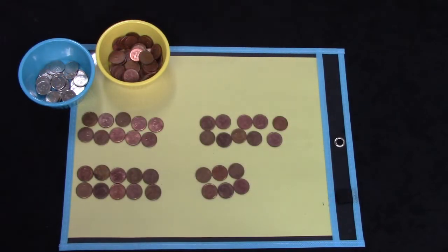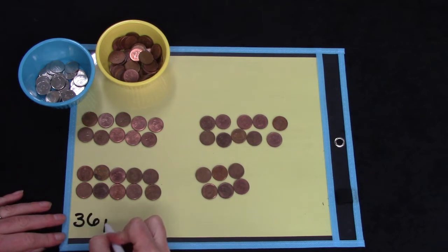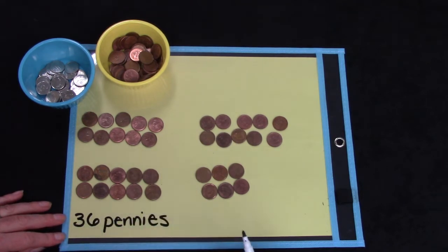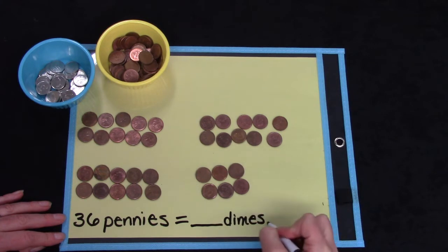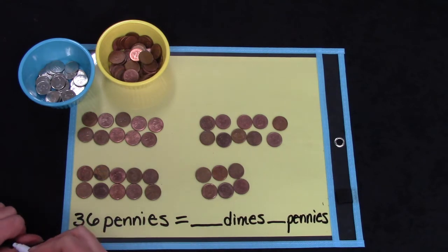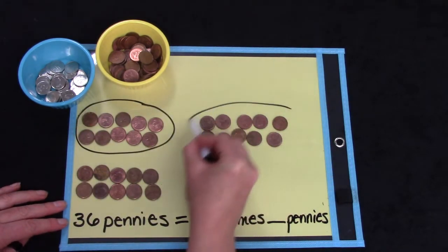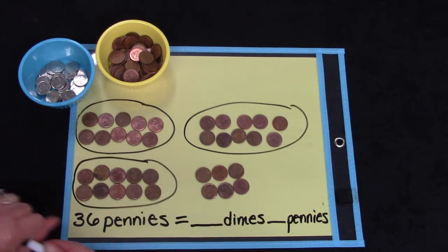Here I have 36 pennies. 36 pennies equals how many dimes and how many pennies? Now I give you a big hint. Do you see that I put our money into groups? I put them into groups of 10.